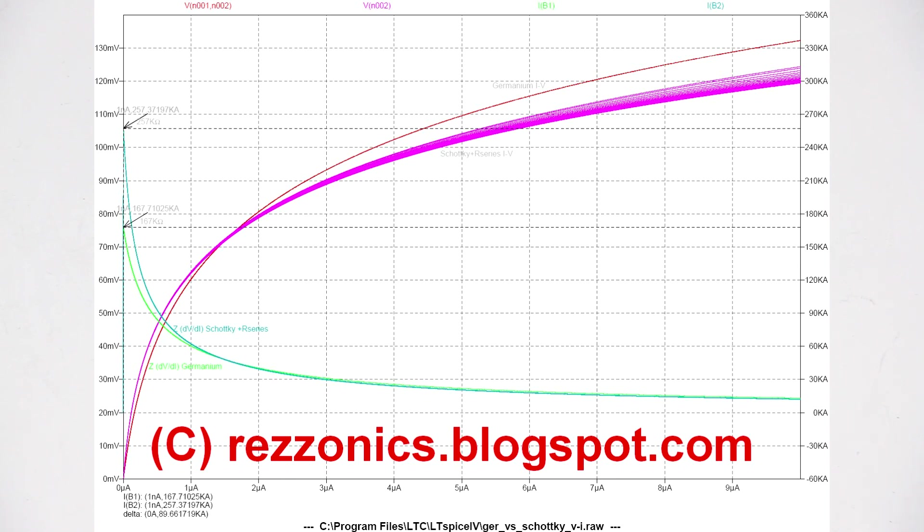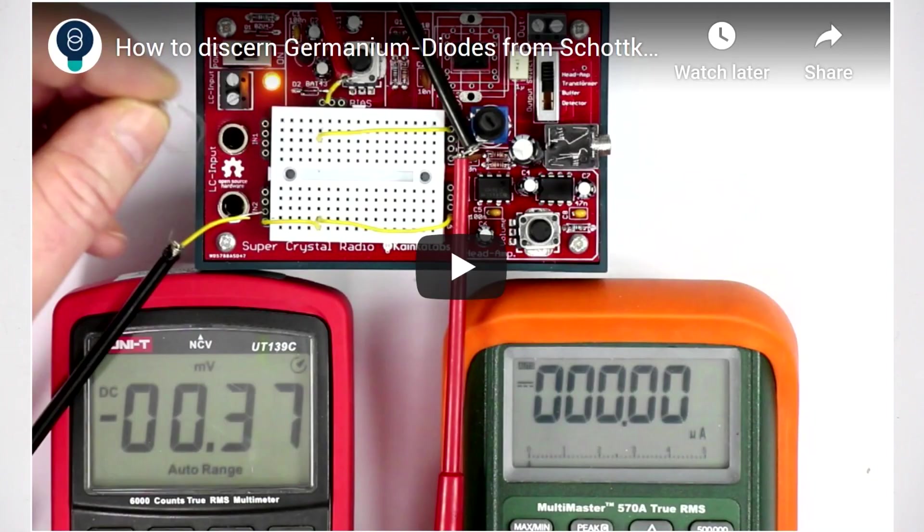The difference is many decades. Germanium diodes usually have a reverse current in the range of microamps while Schottky diodes are in the nanoamps region, and I will link the video about how to discern them.